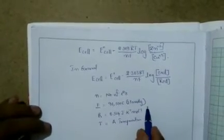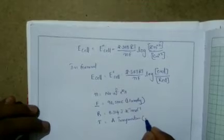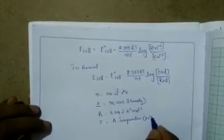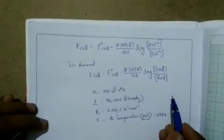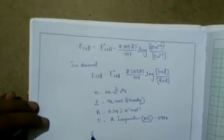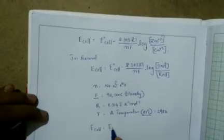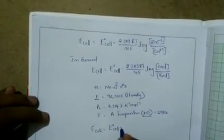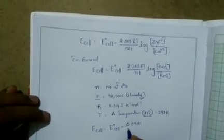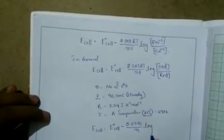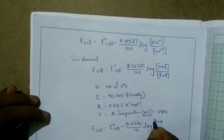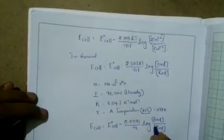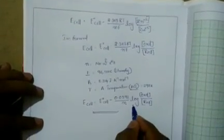One Faraday equals 96500 coulombs. R is the gas constant, 8.314 joule per kelvin per mole. T is absolute temperature. If you substitute T at 25 degrees Celsius, that is 298 Kelvin, and substitute all values of R, T, and F, the Nernst equation becomes: E cell equals E⁰ cell minus 0.0591/n times log(oxidation part / reduction part).